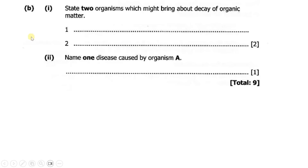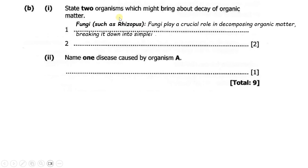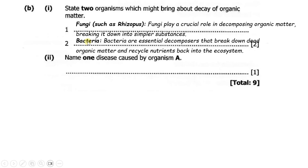Part B, part 1 says: state two organisms which might bring about decay of organic matter. One organism is actually fungi, such as Rhizopus. Fungi play a crucial role in decomposing organic matter, breaking it down into simpler substances. Another organism is bacteria. Bacteria are essential decomposers that break down organic matter and recycle nutrients back into the ecosystem.